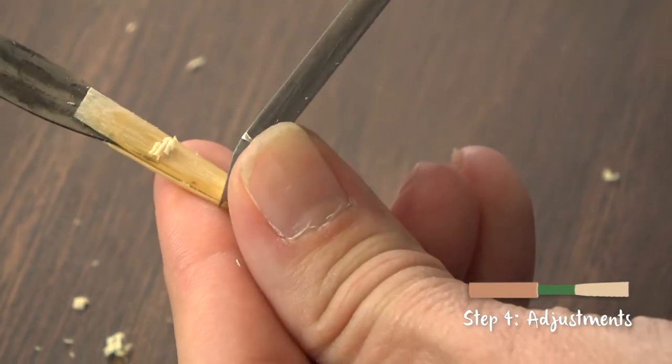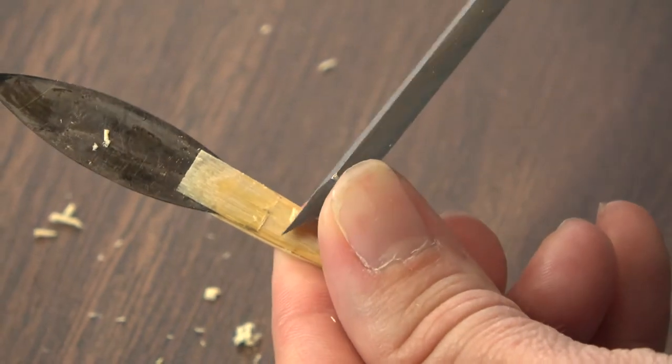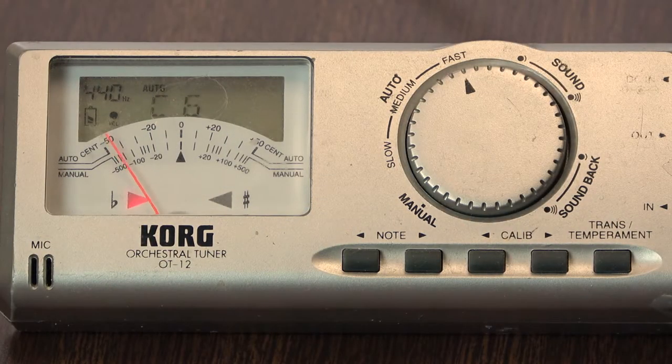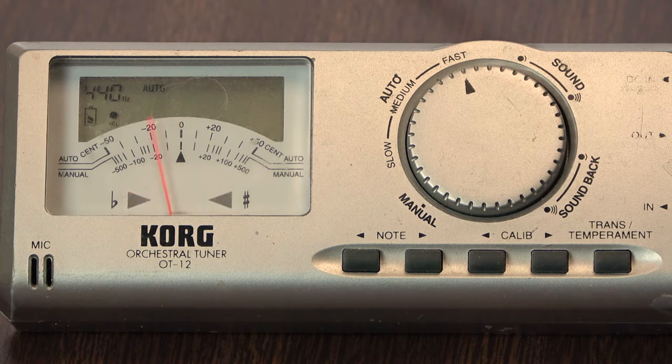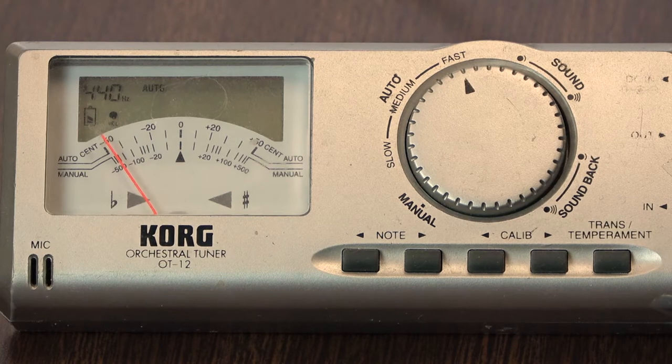Then test the crow like you did the day before. The goal is that the reed should crow a double C, meaning that there is a higher register C if you blow lightly and a lower C that comes in if you blow with more strength.